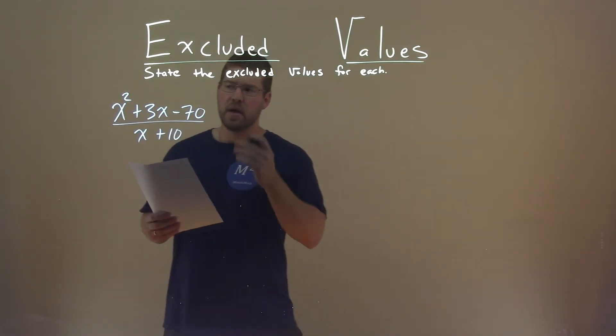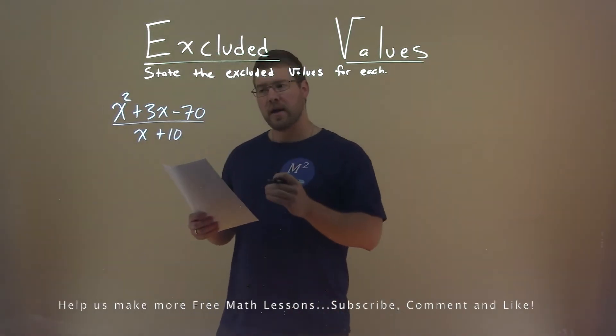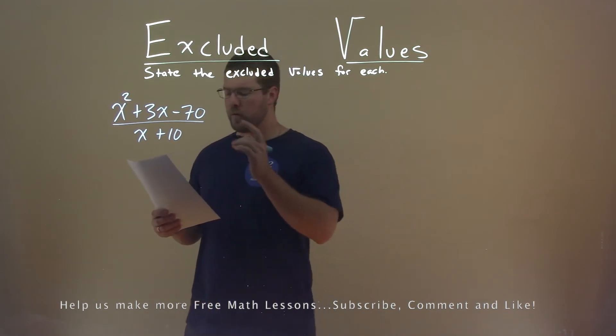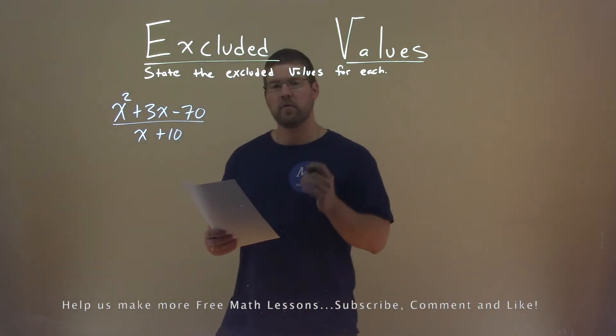We're given this problem right here: x squared plus 3x minus 70 over x plus 10, and we want to find the excluded value.